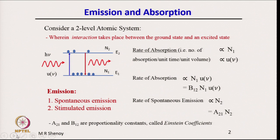Emission and absorption — consider a two-level atomic system. A two-level atomic system is one wherein interaction, here meaning emission and absorption, takes place between the ground state and an excited state. Such a system we call a two-level atomic system.